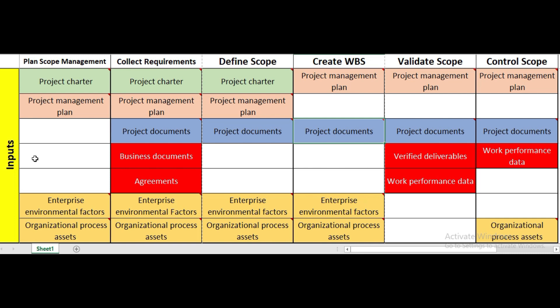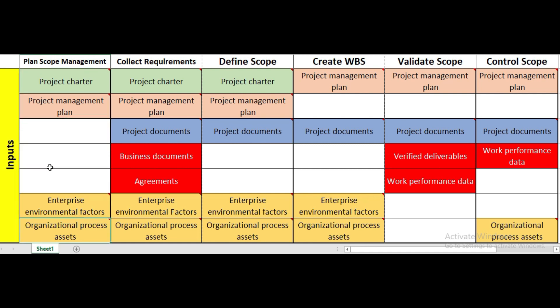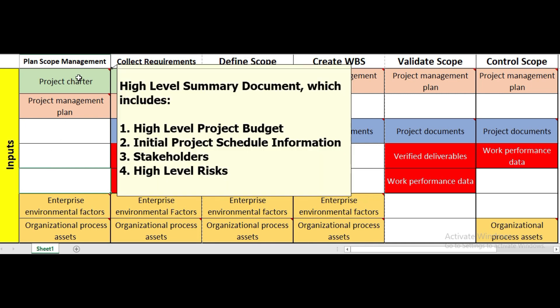Now let's look at the inputs. The first process is plan scope management. In plan scope management, we need project charter, project management plan, enterprise environmental factors, and organizational process assets as inputs — because we need these documents in order to develop the scope management plan. The project charter provides the high-level summary of the project.